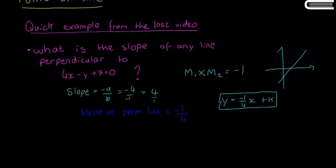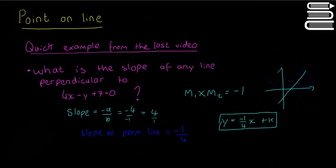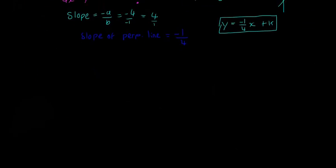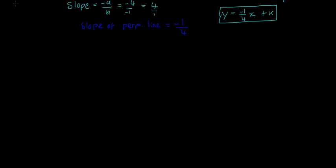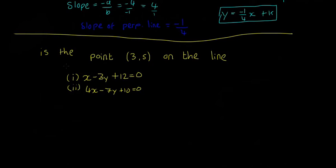Now let's move to verifying that a point is on a line. The question is: is the point (3, 5) on the line x - 3y + 12 = 0? And is it on the line 4x - 7y + 10 = 0?